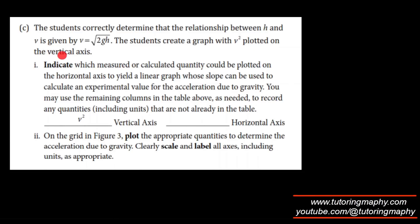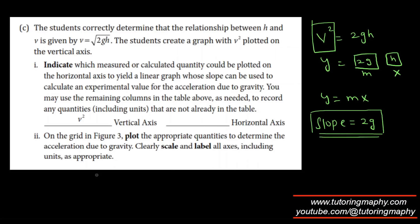The students correctly determined that the relationship between h and v is given by this equation. The students create a graph of V² on the y-axis. Indicate which measured or calculated quantity could be plotted on the horizontal axis to yield a linear graph whose slope can be used to calculate an experimental value for the acceleration due to gravity. Obviously, this one is easy—the moment you square it, you get V² = 2gh. So if this is y, the slope is 2g, and x is the height h.